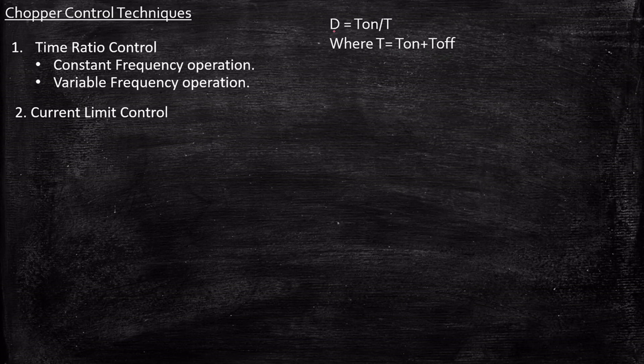If we have a duty cycle of 50%, meaning 50% of the time it is on and 50% of the time it is off. It's basically a representation of T_on by the total time period. One important observation: we know that T is also equal to 1 by F. That is where we will consider constant frequency or variable frequency operation.